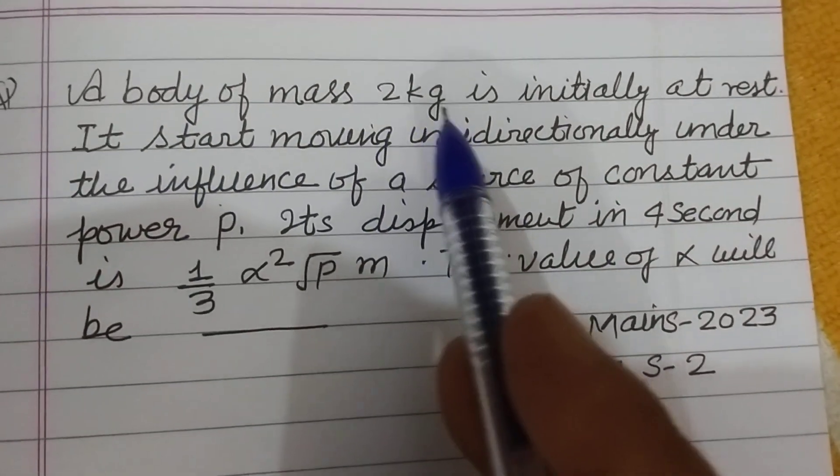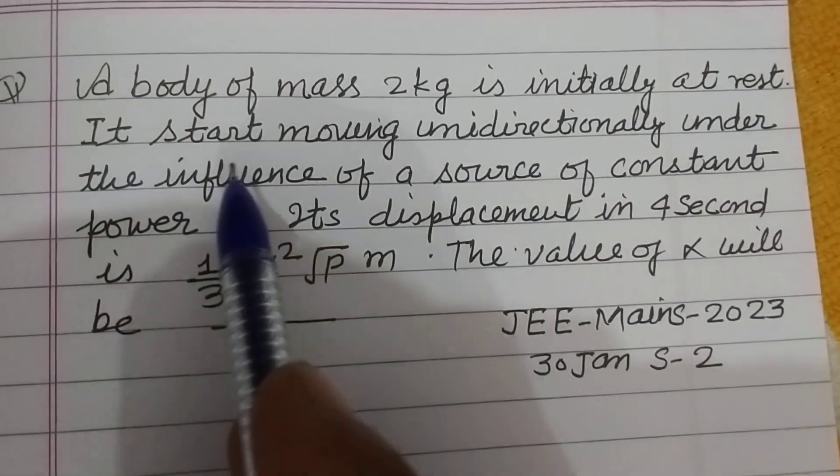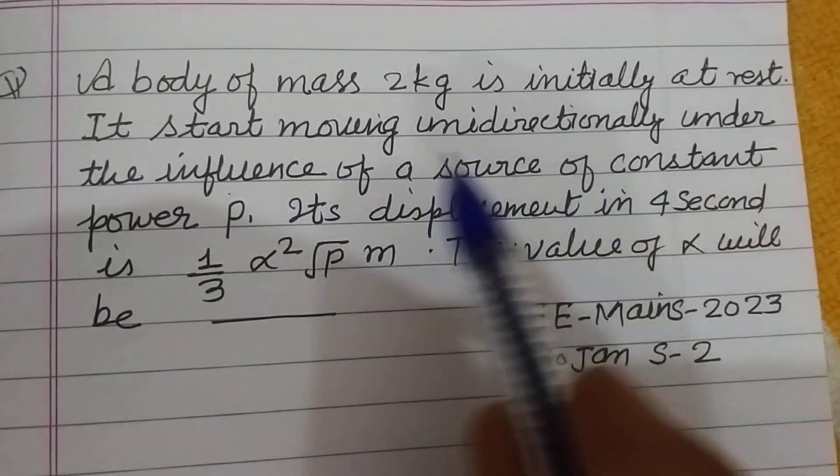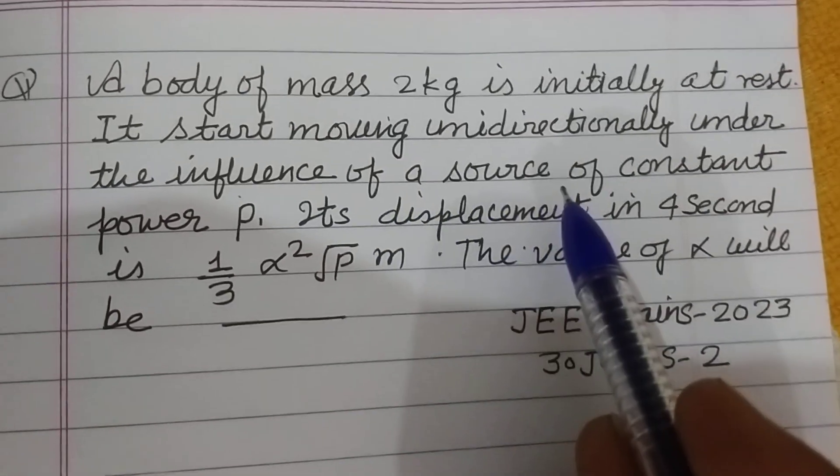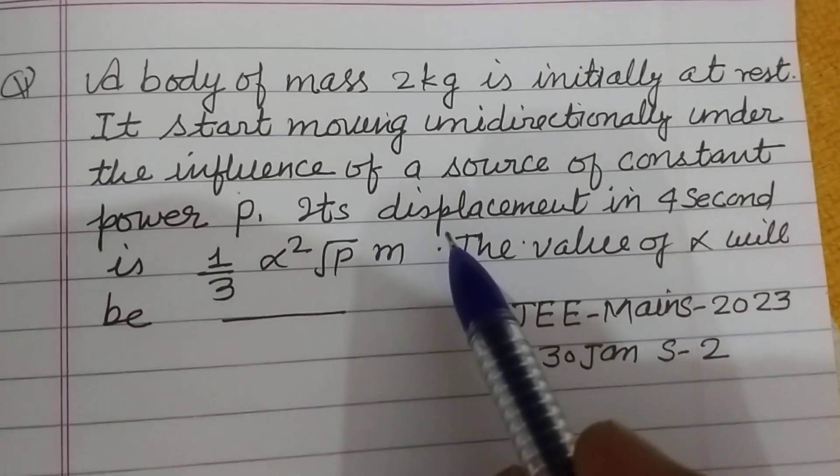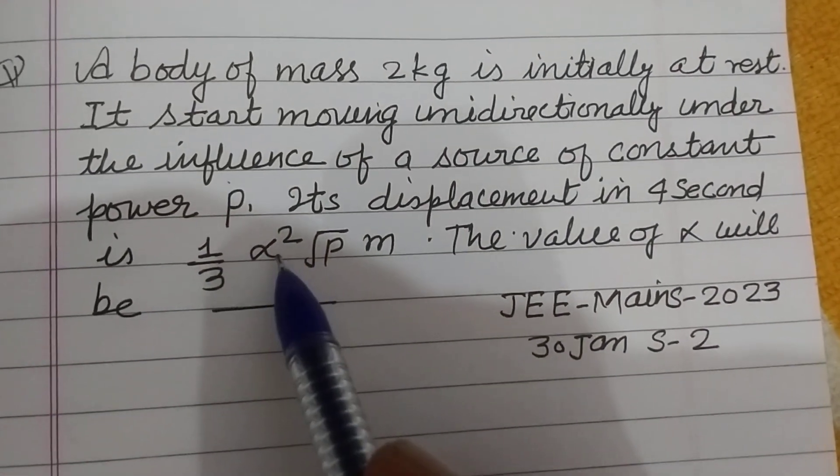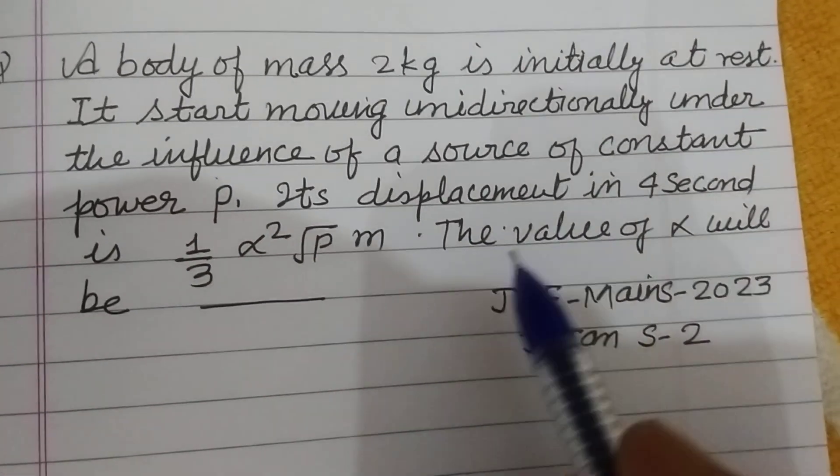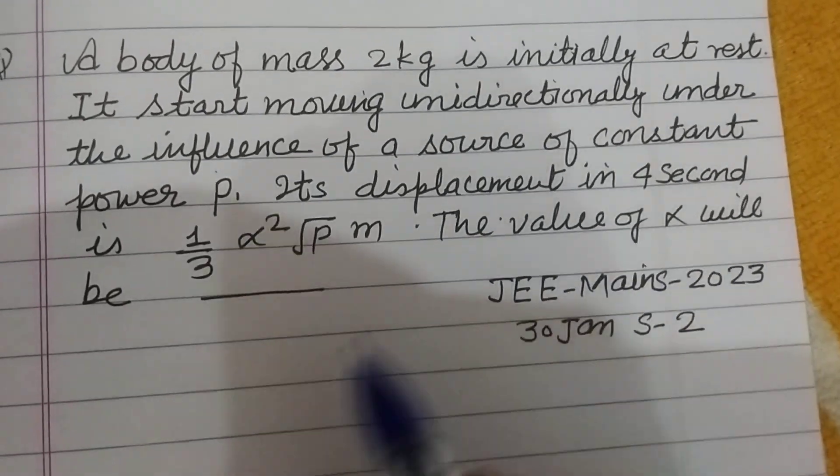A body of mass 2 kg is initially at rest. It starts moving unidirectionally under the influence of a source of constant power P. Its displacement in 4 seconds is 1/3 alpha squared square root P meter. The value of alpha will be.